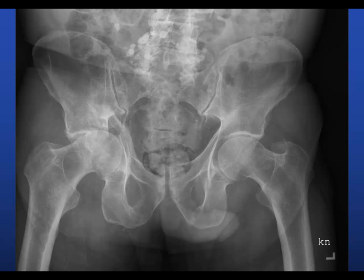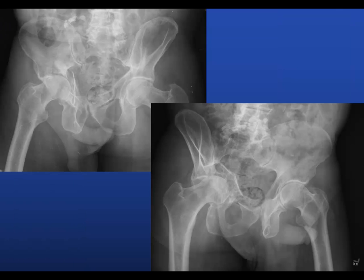Here's an example of all of those. You have this protrusio, dome impaction up in here — here's probably some of the intact dome, and then it's gone here. You have this disruption of the quadrilateral plate, the fracture coming down this way, and the quadrilateral plate has been pushed into the pelvis. You can't tell on this X-ray if there's also posterior column involvement, but it looks like there might be.